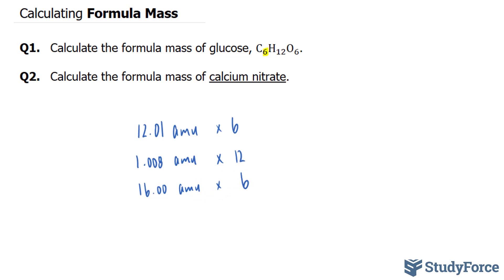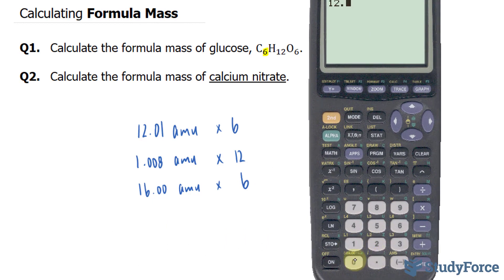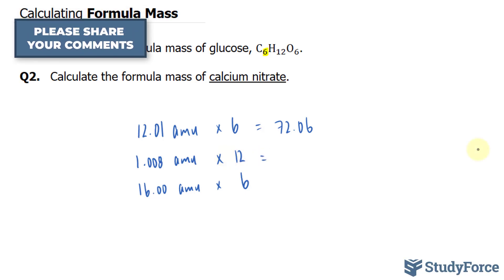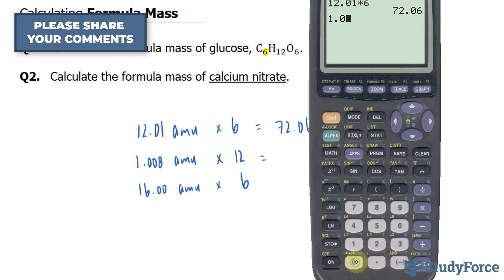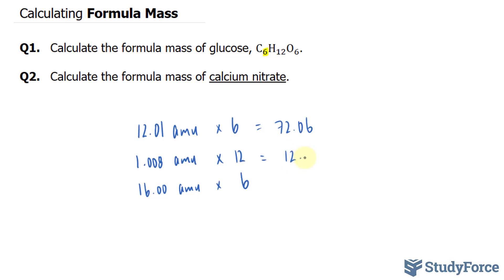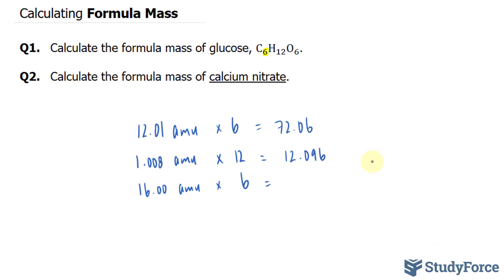Now, using our calculator, I'll multiply 12.01 by 6. I'll pull up my calculator. I have 12.01 times 6. That gives us 72.06. Let's do the next calculation. We have 1.008 times 12. That's 12.096. And finally, we have 16 times 6, which is 96.